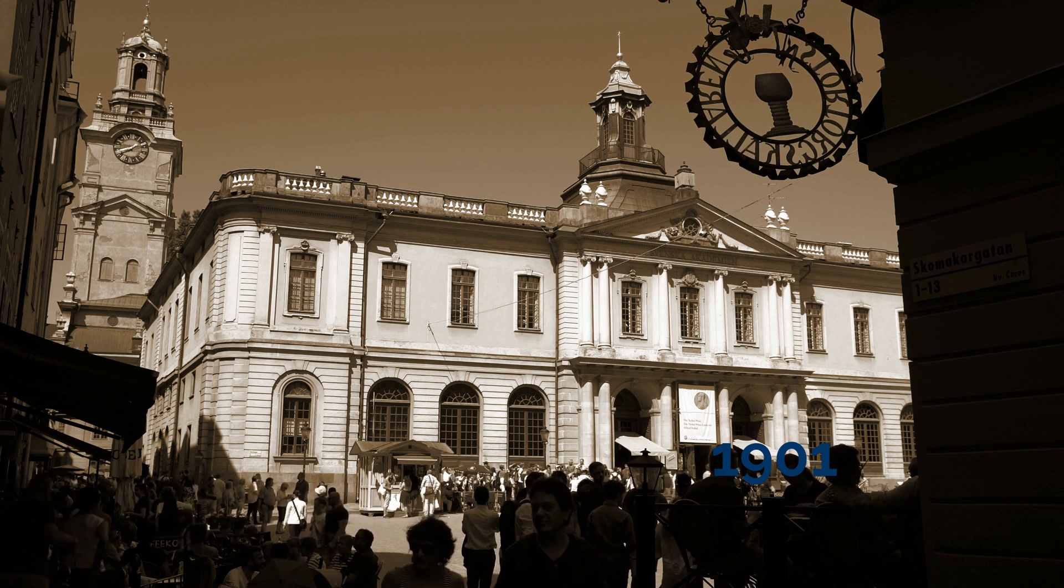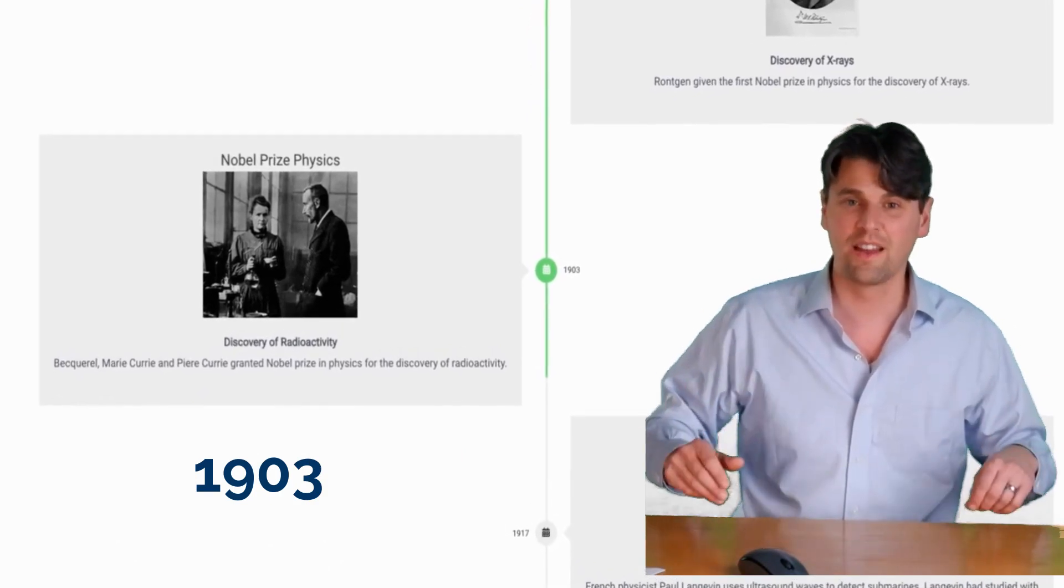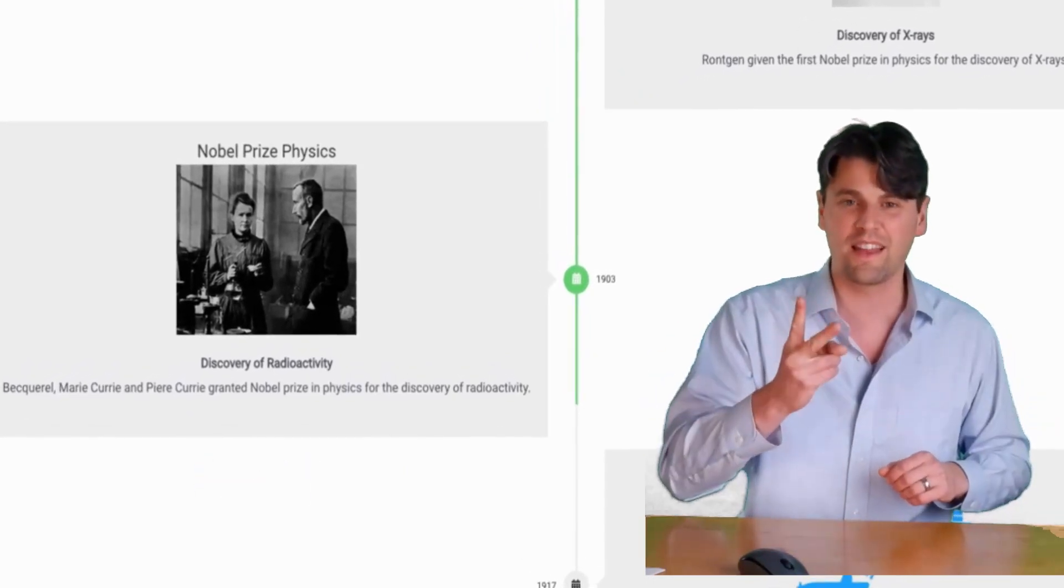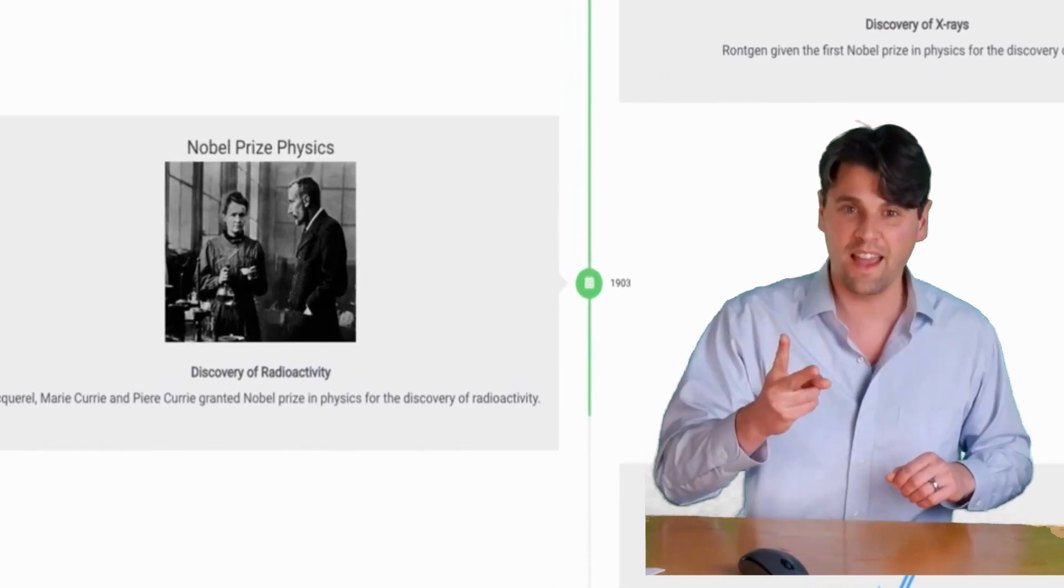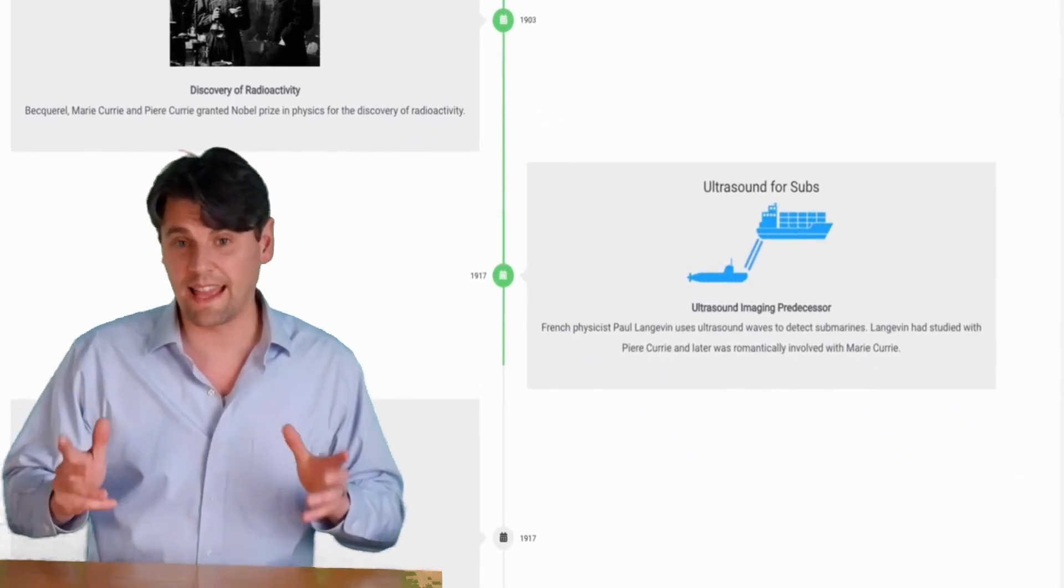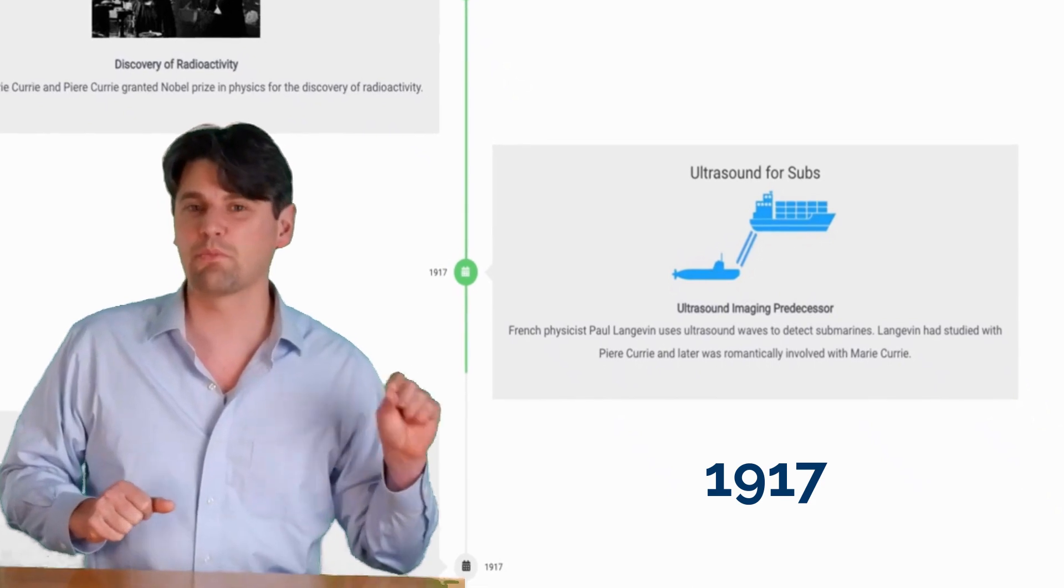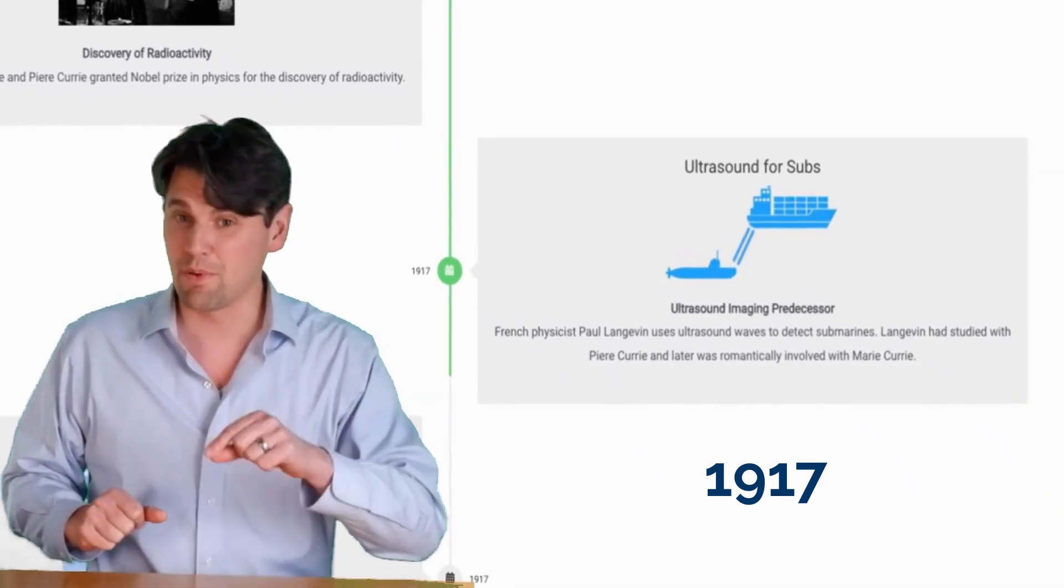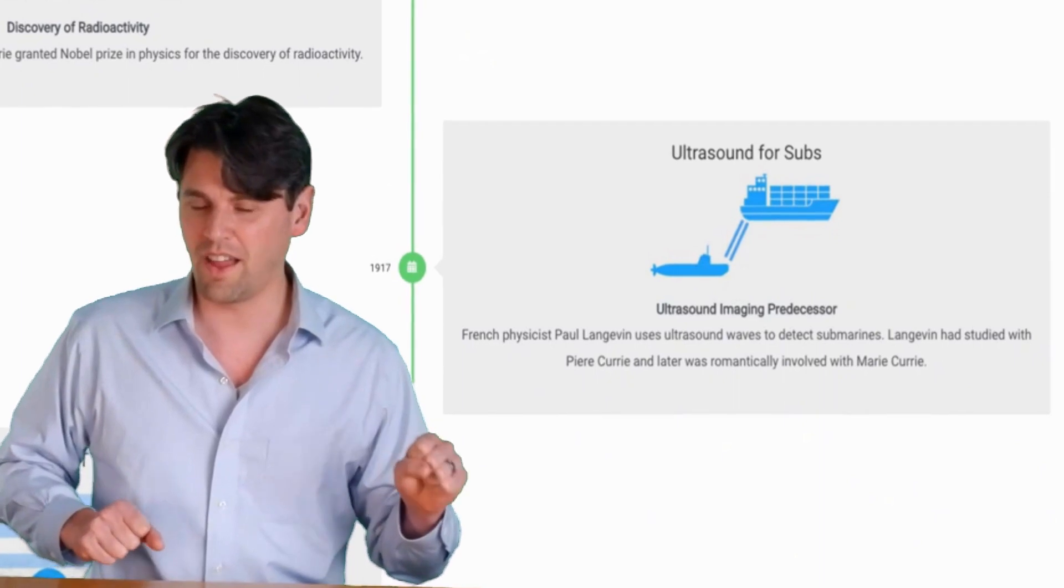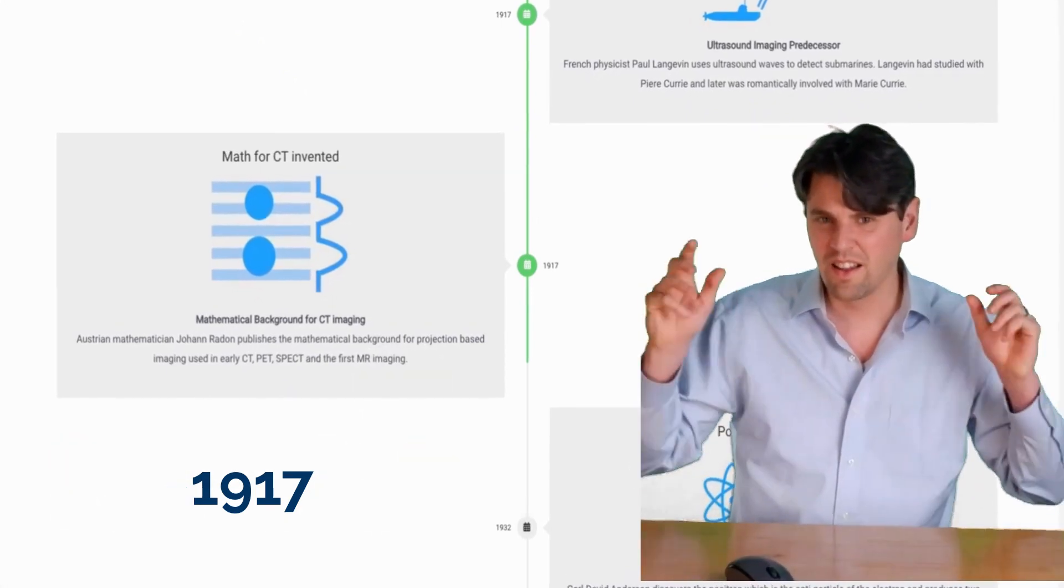After Becquerel, along with the Curies, received a Nobel Prize—the first woman to receive a Nobel Prize and one of just a couple that has actually two Nobel Prizes in different fields, chemistry and physics, for Marie Curie. Then ultrasound was actually used for boats. This was done by Langevin in Curie's lab, in Pierre Curie's lab, and he actually became romantically involved later on with Marie Curie. That was kind of scandalous at the time, and that's how the history of ultrasound was actually romantically entangled with the history of nuclear medicine.